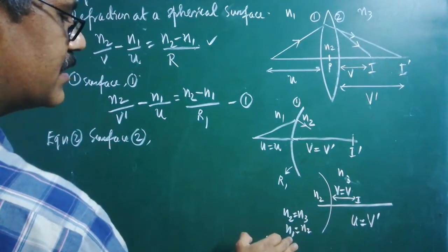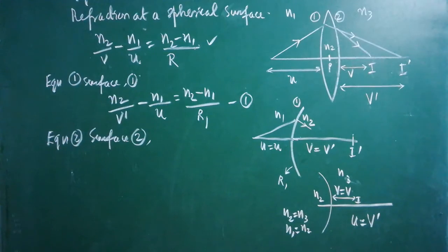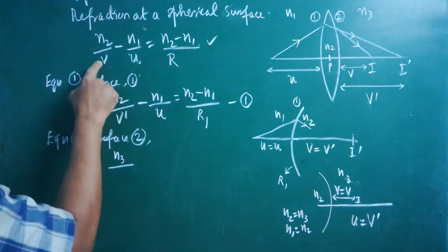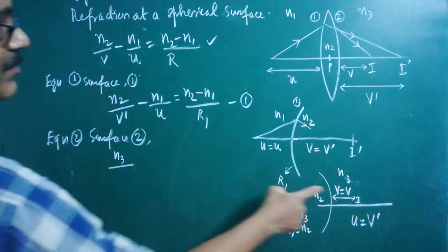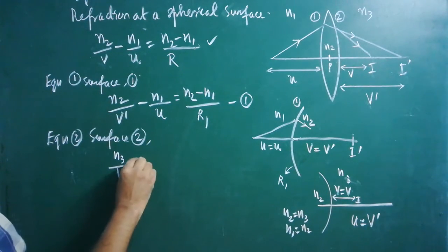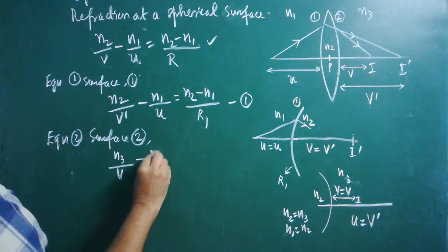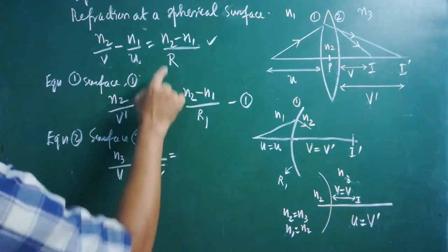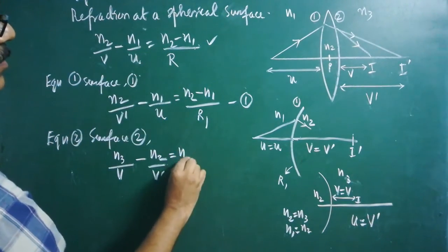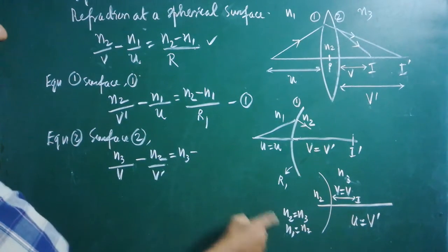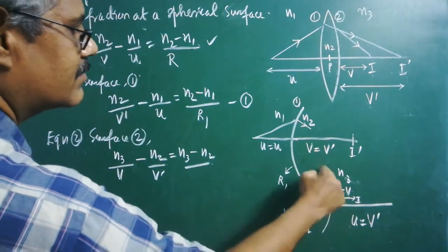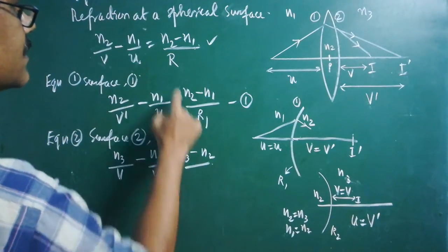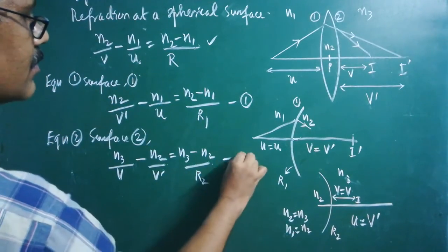Wherever N2 comes, write N3; wherever N1 comes, write N2. Looking at the first equation: substitute N3 for N2, keep V as the image distance, substitute N2 for N1, substitute V' for U. On the right-hand side, substitute N3 for N2, N2 for N1, and R2 for R. This gives the second equation for the second surface.